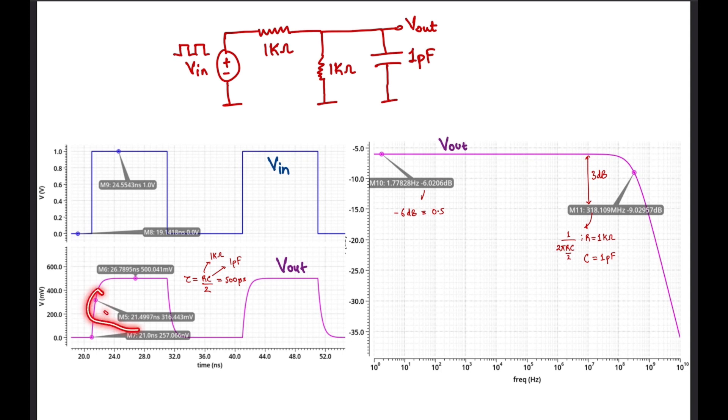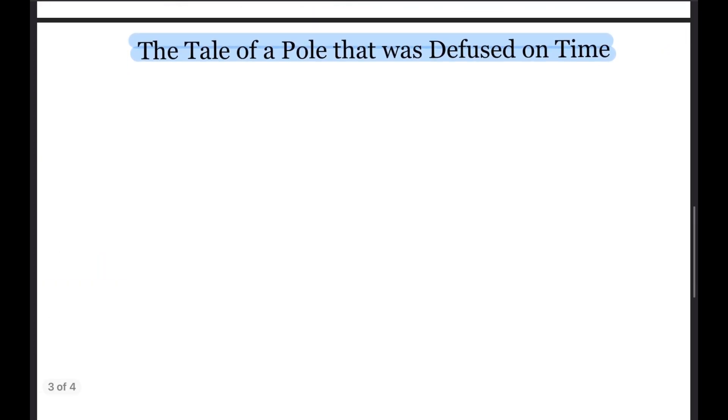Now the question is that what can be done so as to make the reference voltage switch along with the input without a delay? Well, the answer is quite straightforward. All you have to do is add a zero which in loose sense would compensate the delay added by the pole without introducing any additional pole.